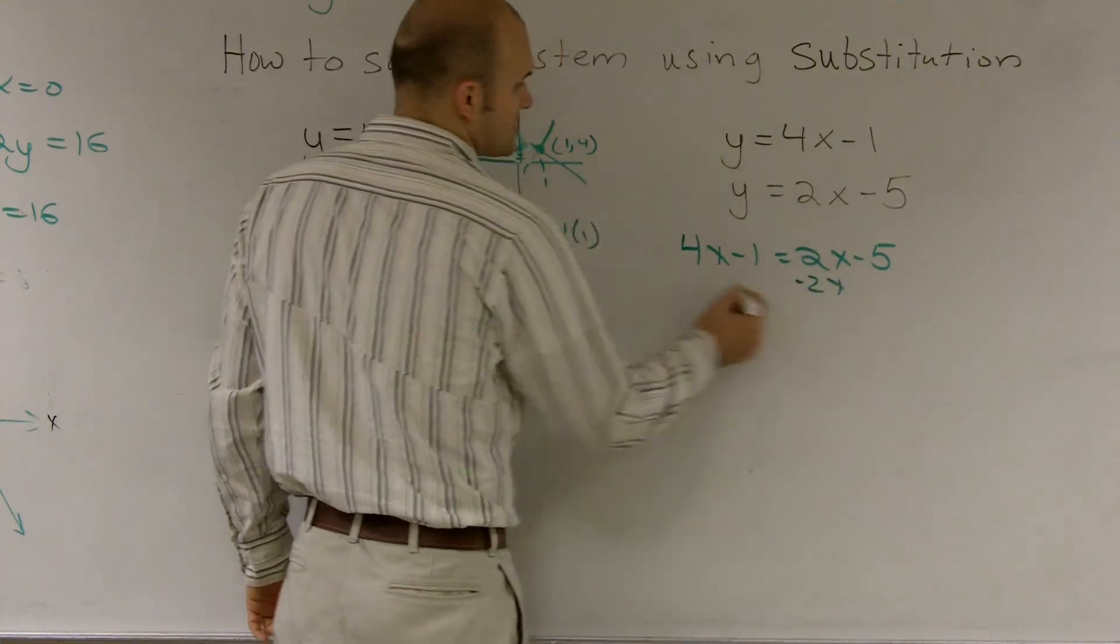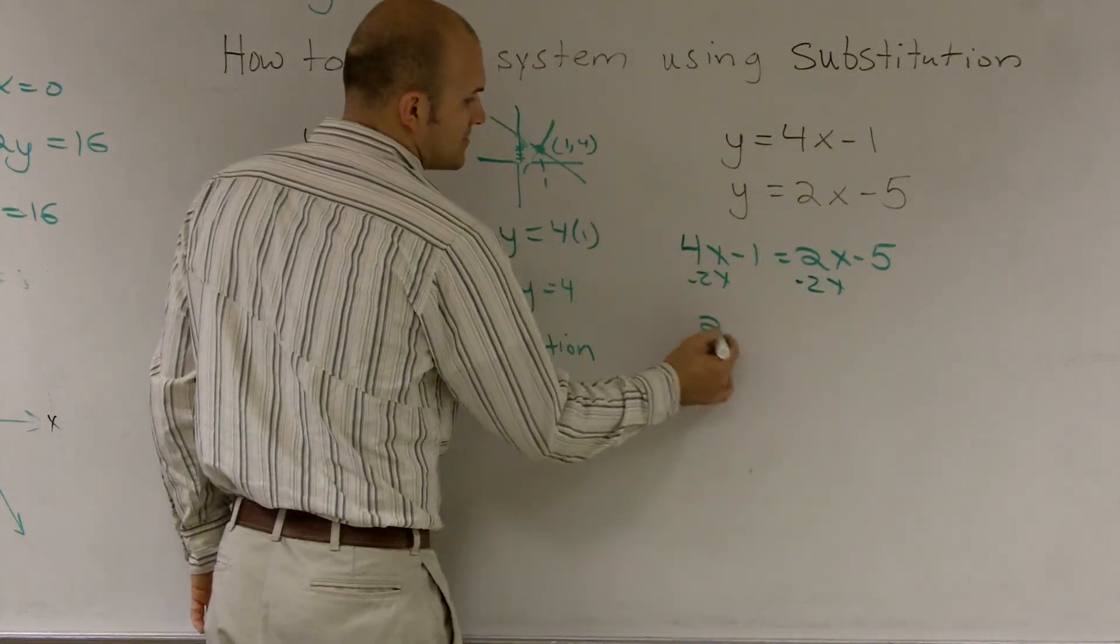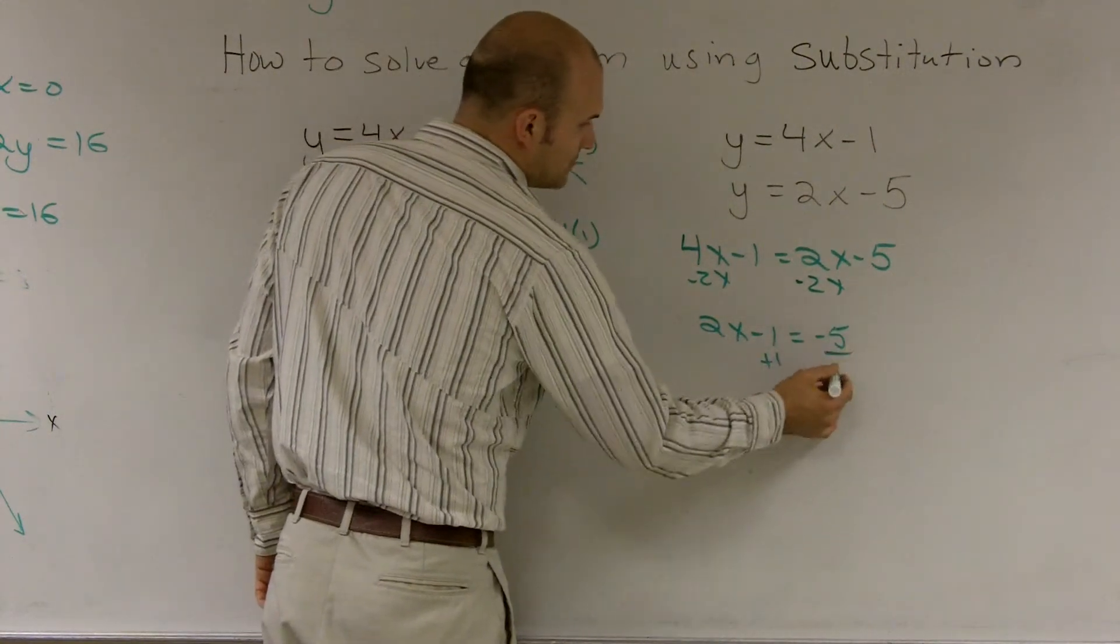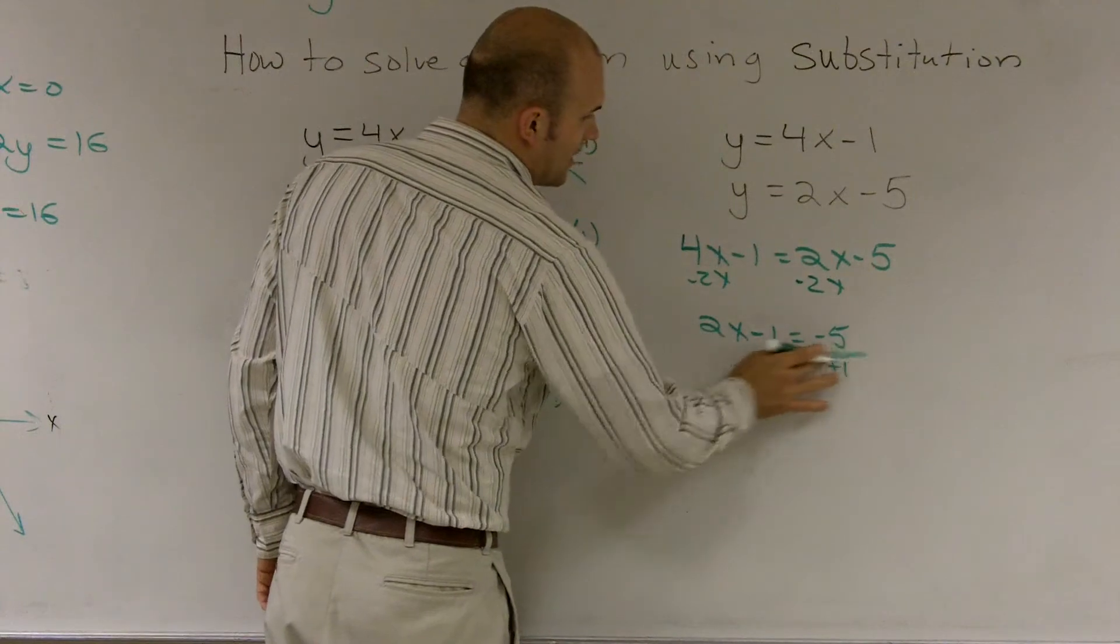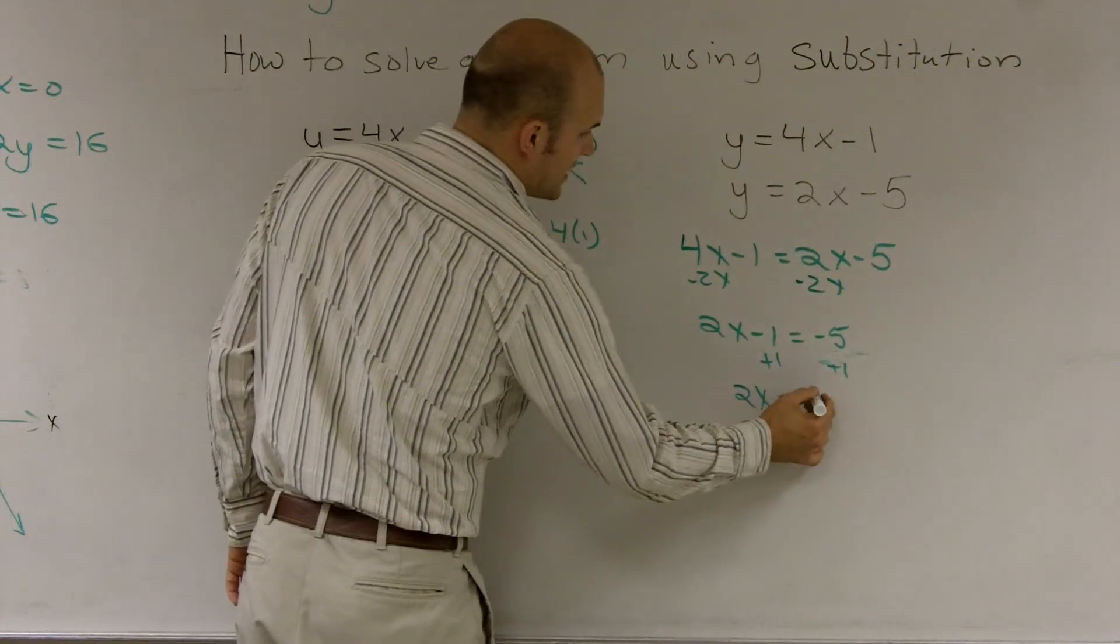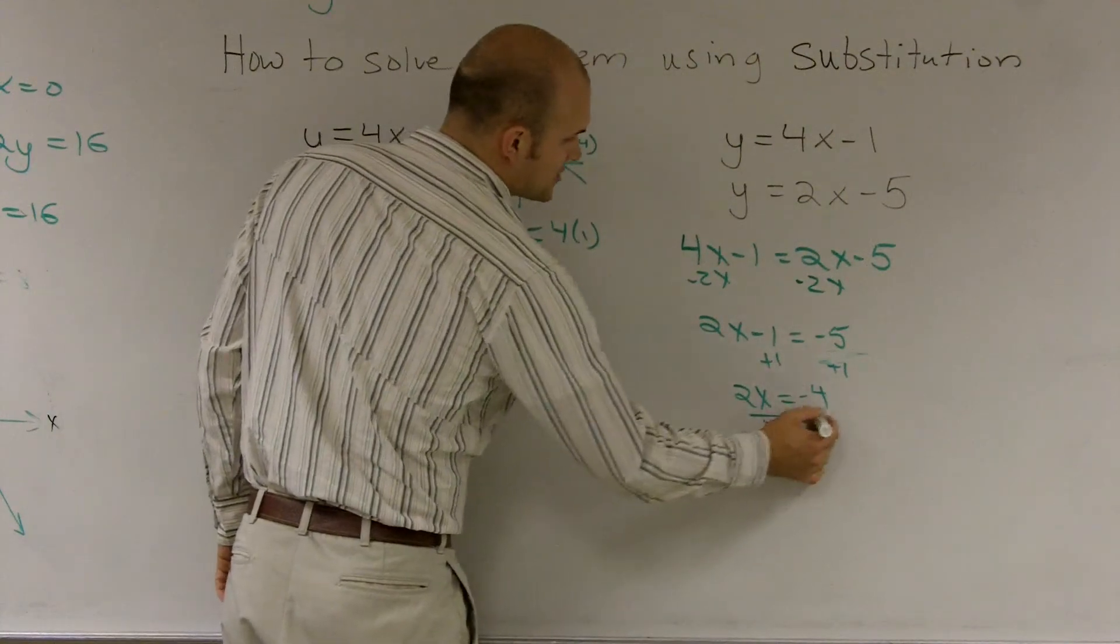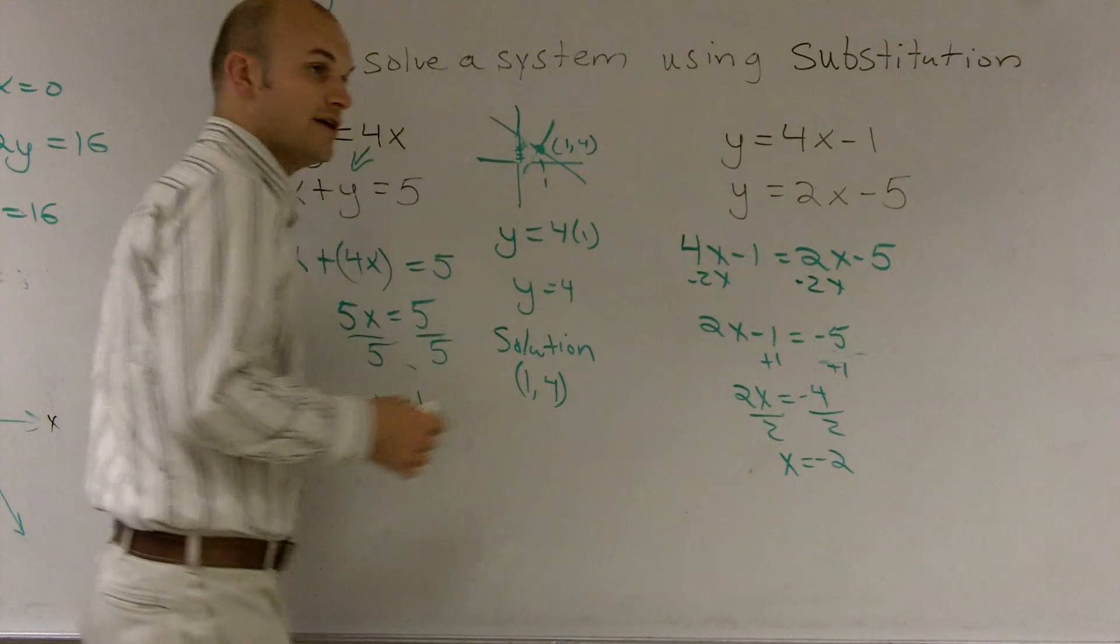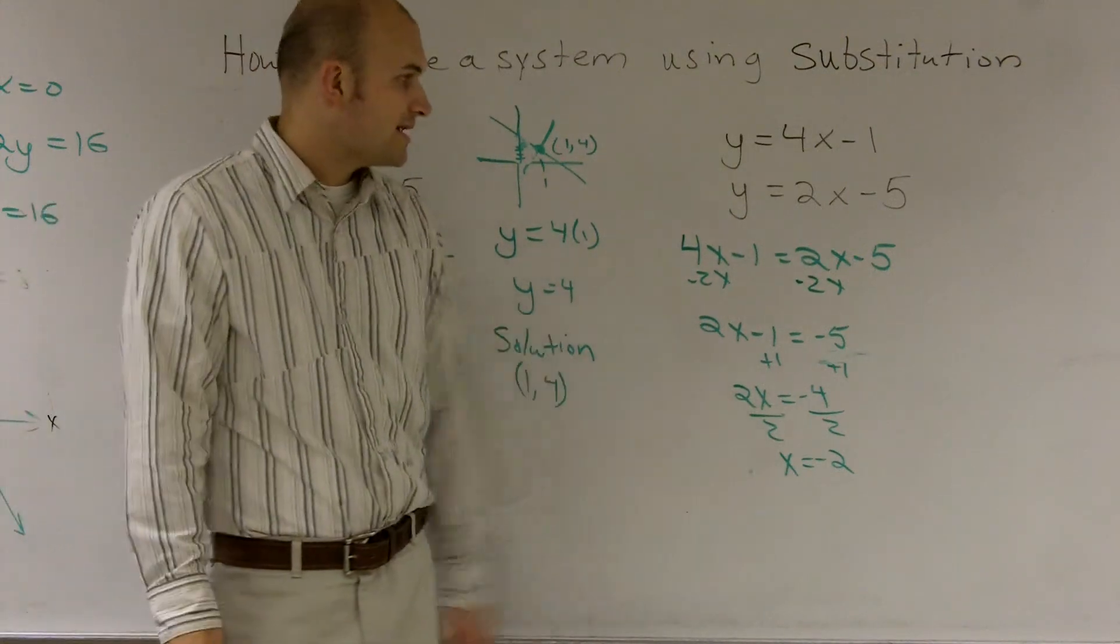So I'll subtract the 2x on both sides. So I obtain 2x minus 1 equals a negative 5, add a one, so I get 2x is equal to a negative 4, divide by 2, x equals a negative 2. So therefore, I know the x coordinate where it intersects is at negative 2.